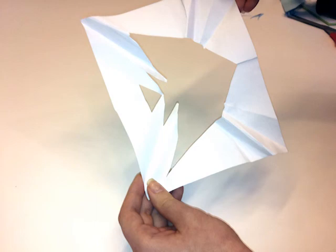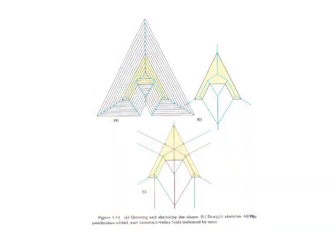So how does the fold-and-cut theorem work? Well, in How to Fold It, author Joseph O'Rourke tells us about the idea of a straight skeleton. Every shape has its own straight skeleton, which you can create by growing and shrinking the sides of the shape at a constant speed.